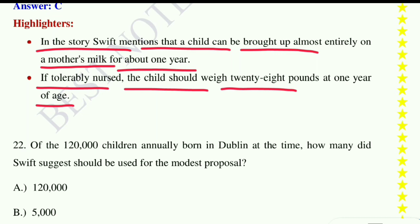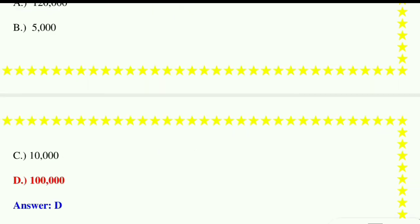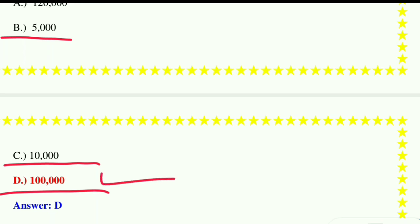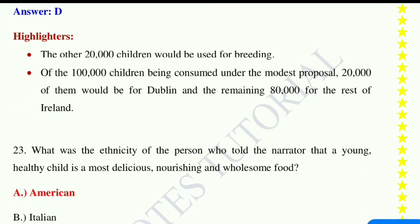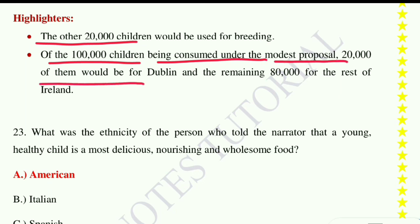Question number twenty-two: Of the one lakh twenty thousand children annually born in Dublin at the time, how many did Swift suggest should be used for the Modest Proposal? Option A: one lakh twenty thousand, option B: five thousand, option C: ten thousand, option D: one lakh. The correct answer is option D, one lakh. The other twenty thousand children would be used for breeding. Of the one lakh children to be consumed, twenty thousand would be for Dublin and the remaining eighty thousand for the rest of the island.